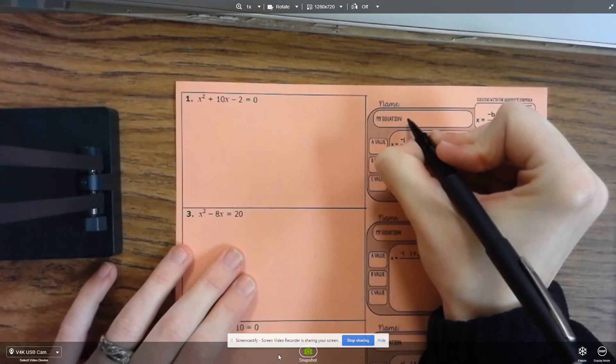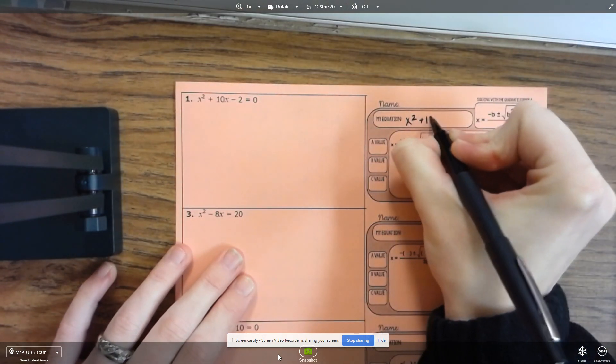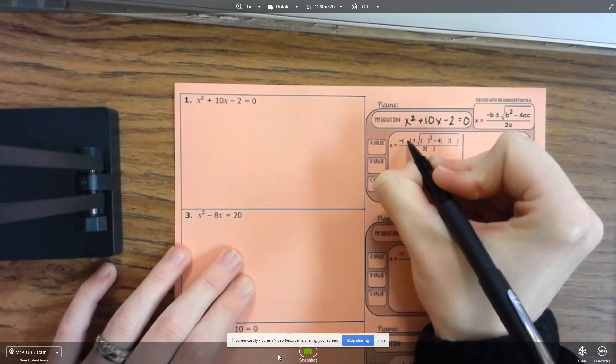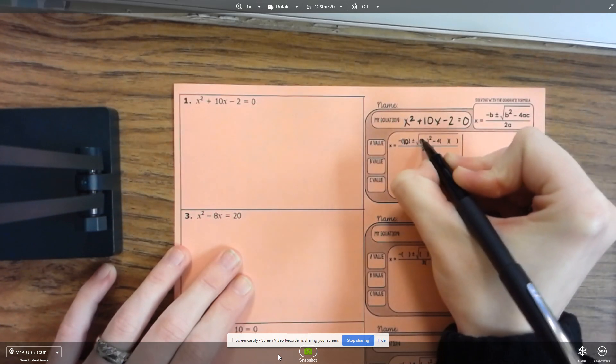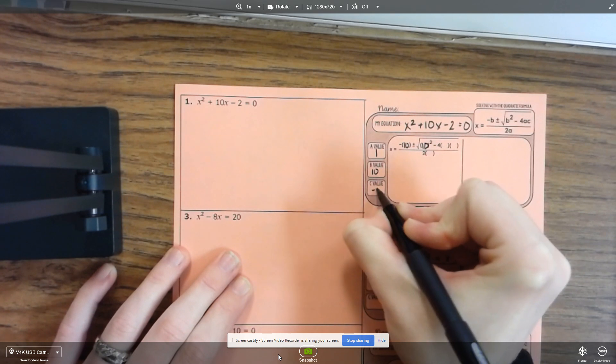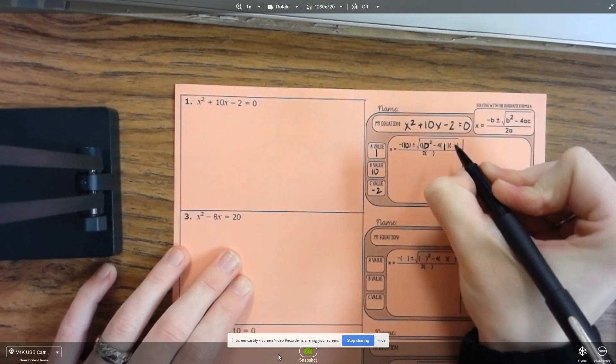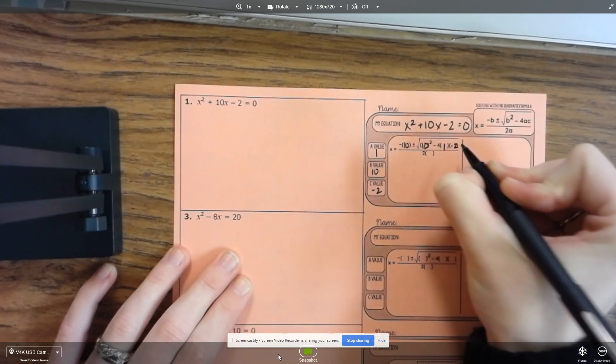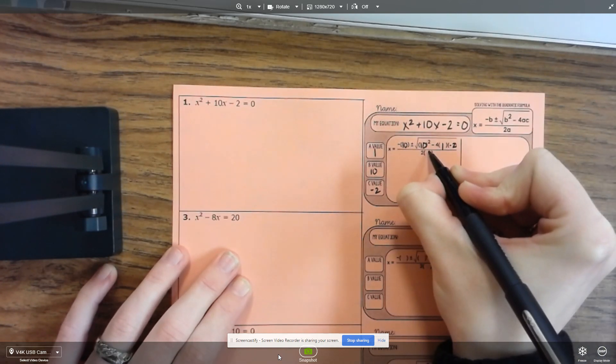Same thing here. Here's our equation: x squared plus 10x minus 2 equals 0. So a negative b would be a 10. b is a 10. So 1, 10, negative 2. a is a 1, c is a negative 2, and then a is a 1.